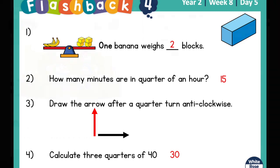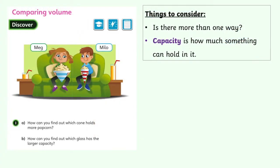Let's have a look at today's Power Maths lesson. Here's today's discover. We've got Meg and Milo sat on their sofa with some drinks and some popcorn, looking like they're ready to watch a film on the TV. Question 1a says: how can you find out which cone holds more popcorn? It's asking you how you can find out — we need to know the method, not just which one. And part B: how can you find out which glass has the larger capacity? Is there more than one way you could find out which cone holds more popcorn? Capacity means how much something can hold, so the thing with the largest capacity can hold the most drink. Click pause, have a go at the discover, and click play when you want to go through the Walt and Wilfs and share your answers.